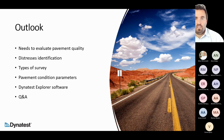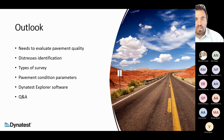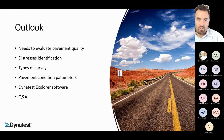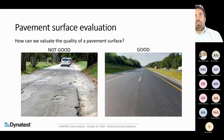An outlook about today's topics: we talk about the need to evaluate pavement quality — why we need to evaluate and what the process is. Then distress identification — what we define as distress and how we define it. We'll see the types of survey, which can be totally different in speed and quality. Then the pavement condition parameters, and finally some Dyethyst equipment and software, and how we elaborate the data to provide these parameters, followed by Q&A.